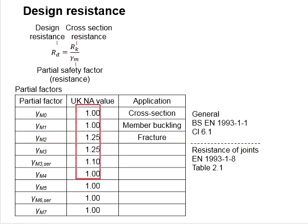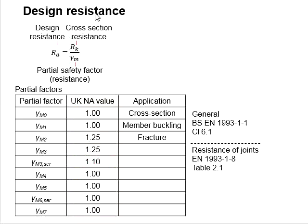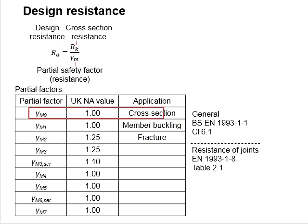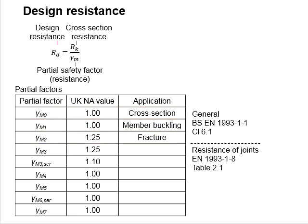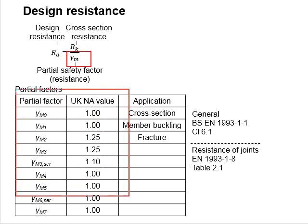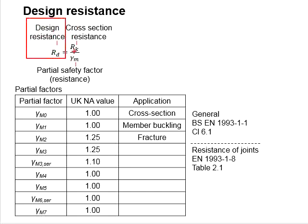The factors of safety are normally 1.0, 1.25, and 1.1. These are the applications of gamma M0, M1, and M2. Gamma M0 is for the cross sections, gamma M1 refers to member buckling, and gamma M2 refers to fracture. The actual resistance of the cross section is divided by these factors of safety to give the design resistance of the member.